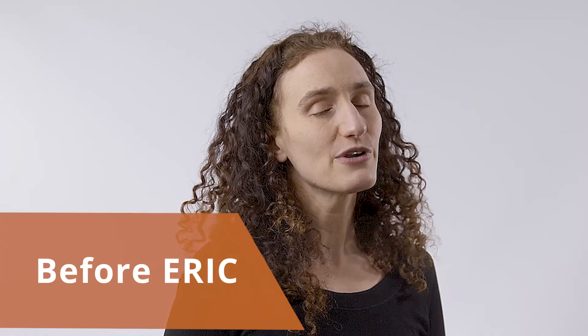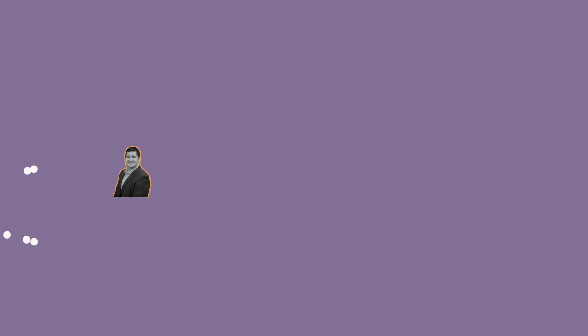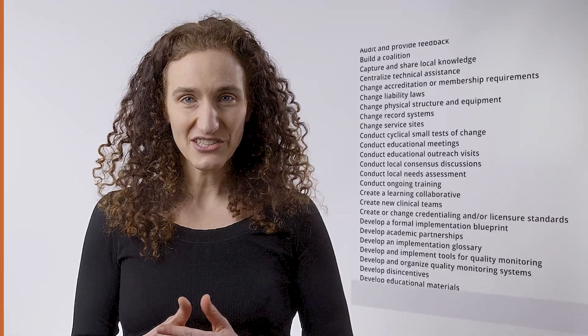That was BE — before Eric. Eric is not the name of this guy. This is Byron Powell, but there's not a great acronym that goes with Byron. ERIC is the Expert Recommendations for Implementing Change. This was made when Dr. Powell got a bunch of implementation scientists together and shepherded them through a modified Delphi process to agree on 73 implementation strategies. Since then others have added and subtracted, but these are the original 73.